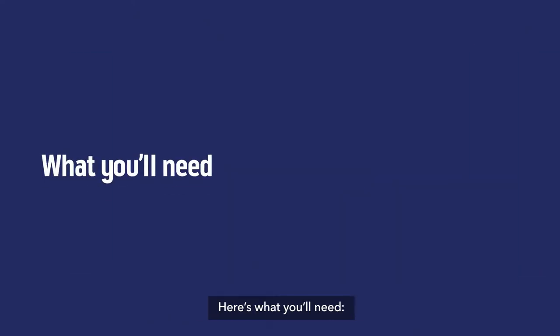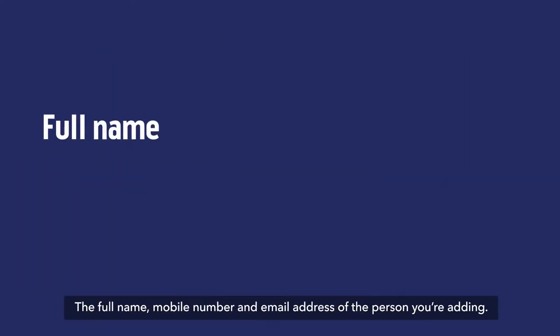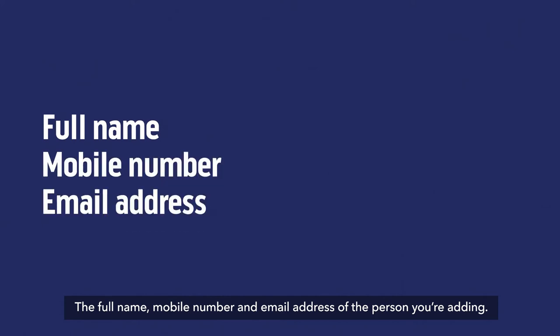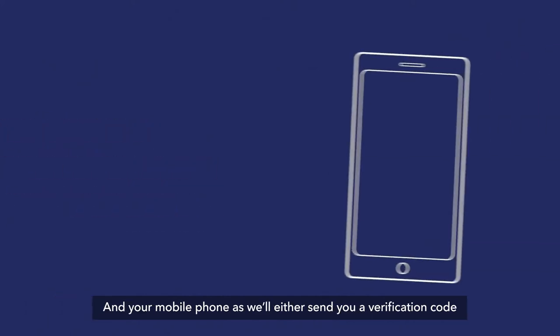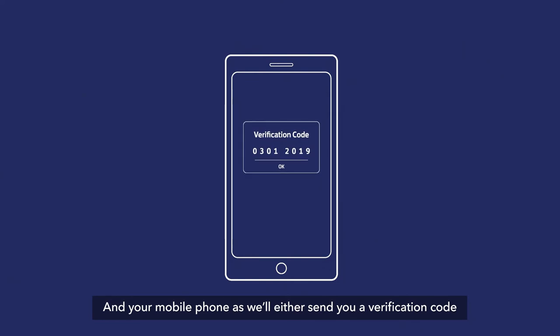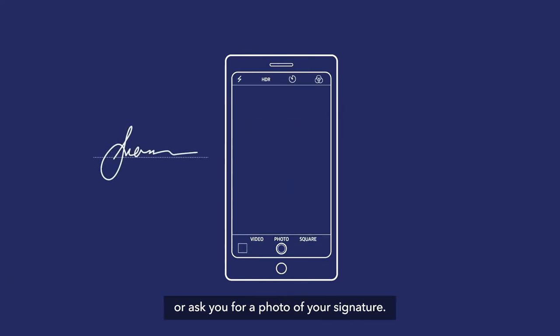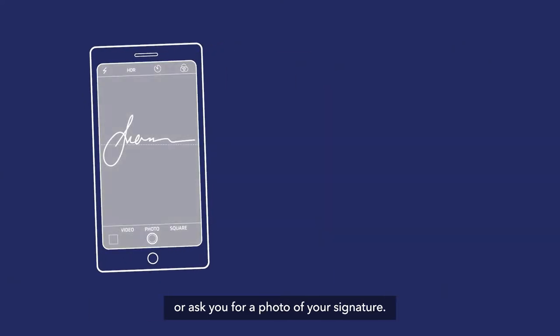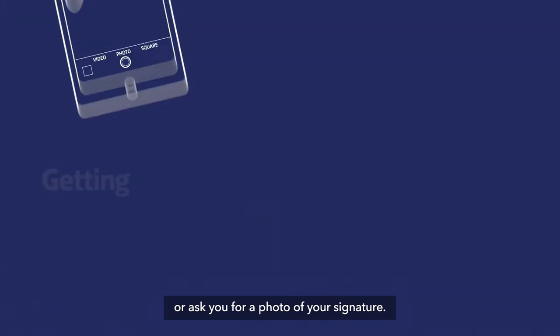Here's what you'll need: the full name, mobile number, and email address of the person you're adding, and your mobile phone — as we'll either send you a verification code or ask you for a photo of your signature.